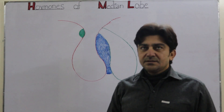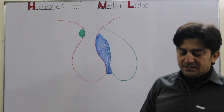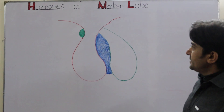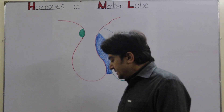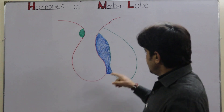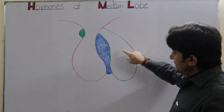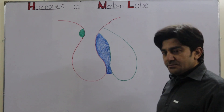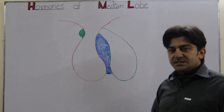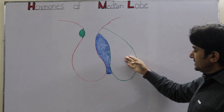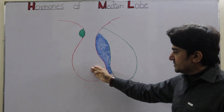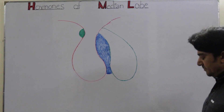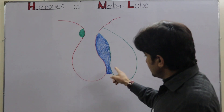Bismillahirrahmanirrahim. My dear students, welcome back to my new lecture. In this lecture, I will talk about the hormones of the median lobe. I have talked in detail about the hormones of the pituitary gland — the anterior lobe and posterior lobe — in previous lectures. Now I will talk about hormones of the intermediate lobe.